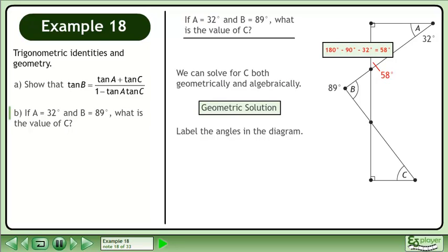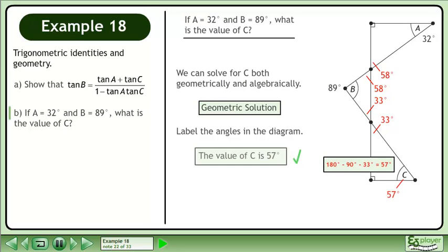Calculate the unknown angle in the top triangle. Opposite angles are equal. Now calculate the unknown angle in the middle triangle. Opposite angles are equal. Now calculate the unknown angle in the bottom triangle. The value of C is 57 degrees.